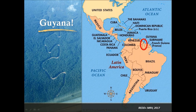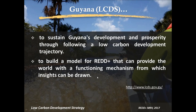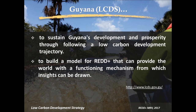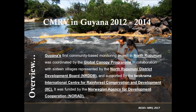In light of that, the Global Canopy Project, IOCRAM International Centre, and the North Rupununi District Development Board — a local board governing an area within Guyana — put together a CMRV project in Guyana, held between 2012 and 2014. This project was totally funded by the Norwegian Agency for Development and Cooperation, Norad. The North Rupununi is made up of 19 communities located in the central part of Guyana.